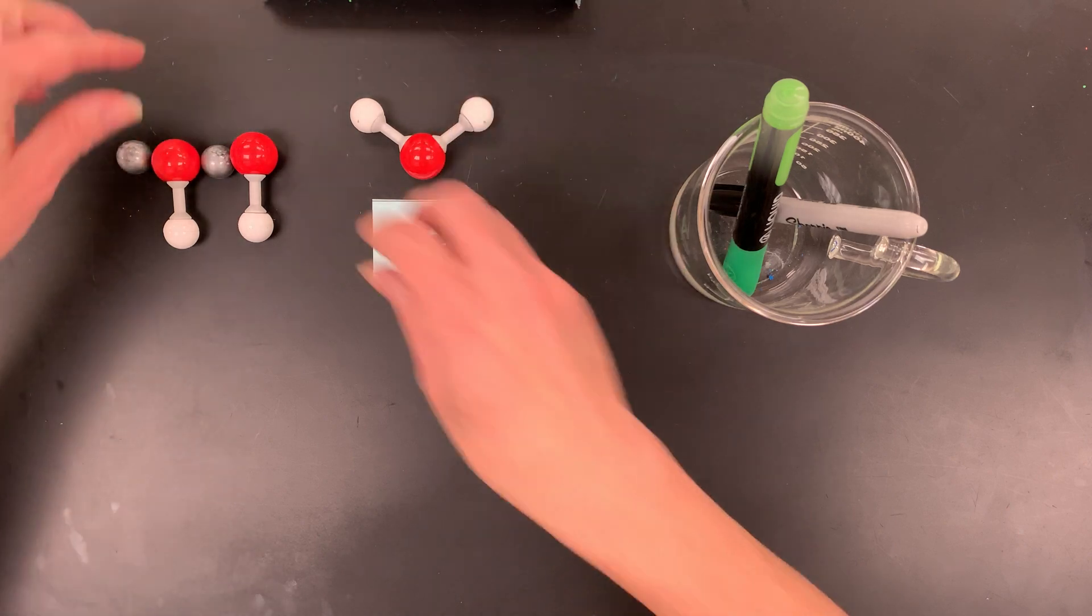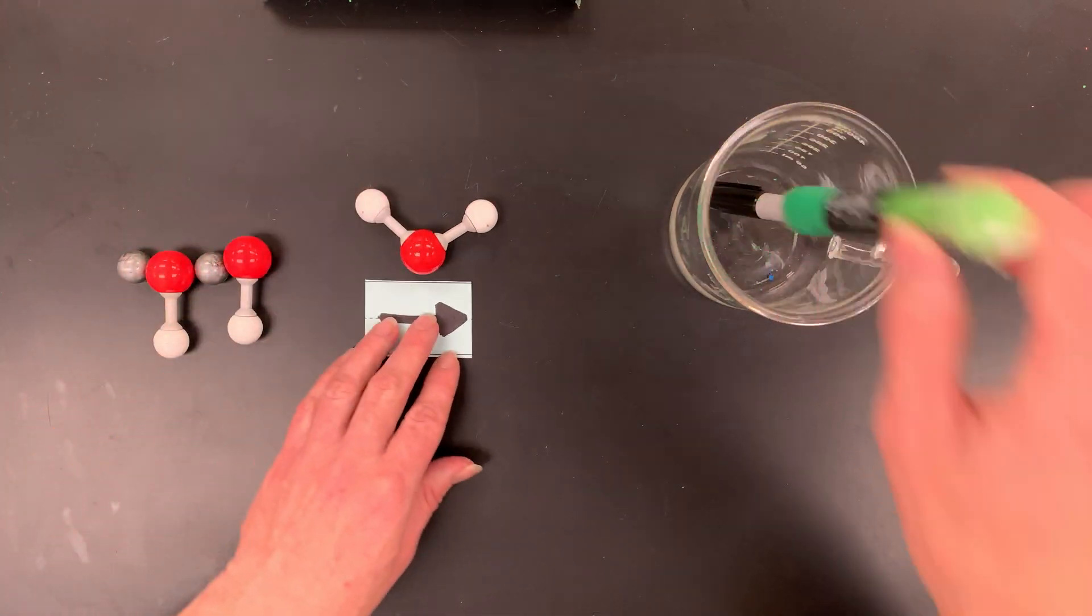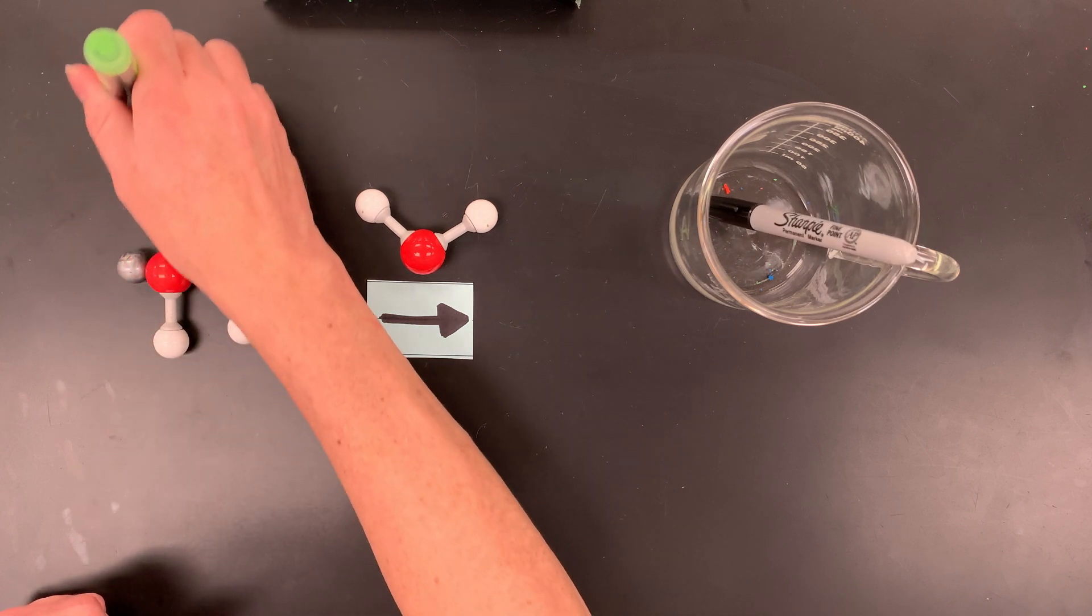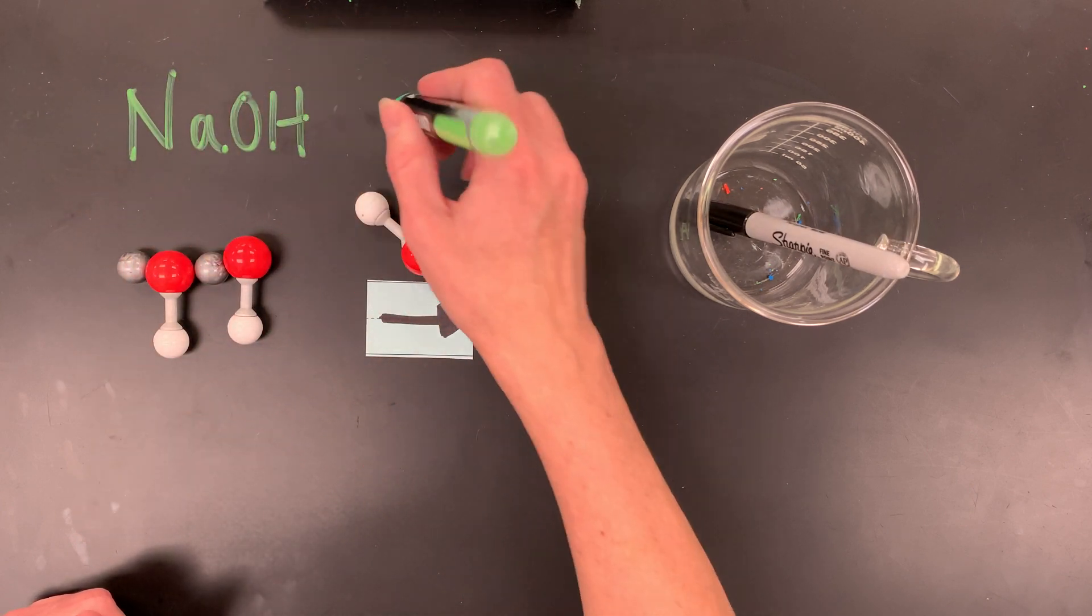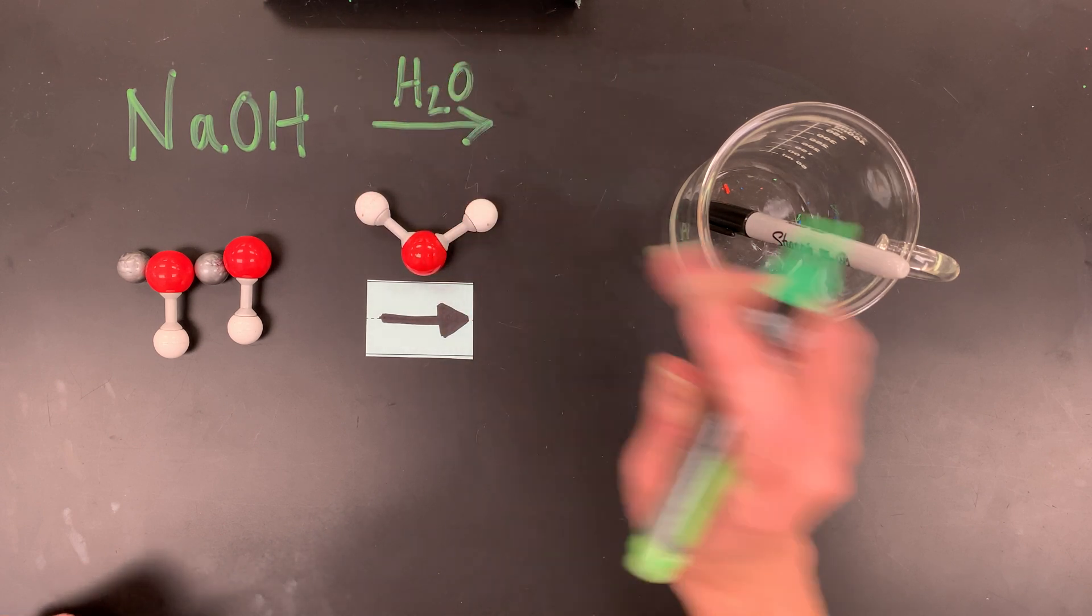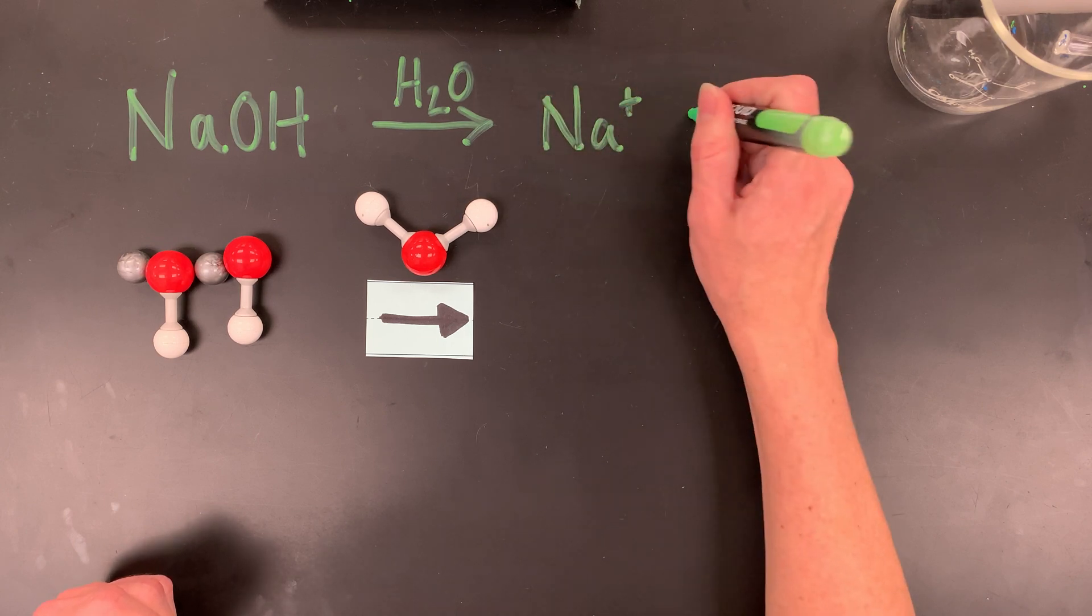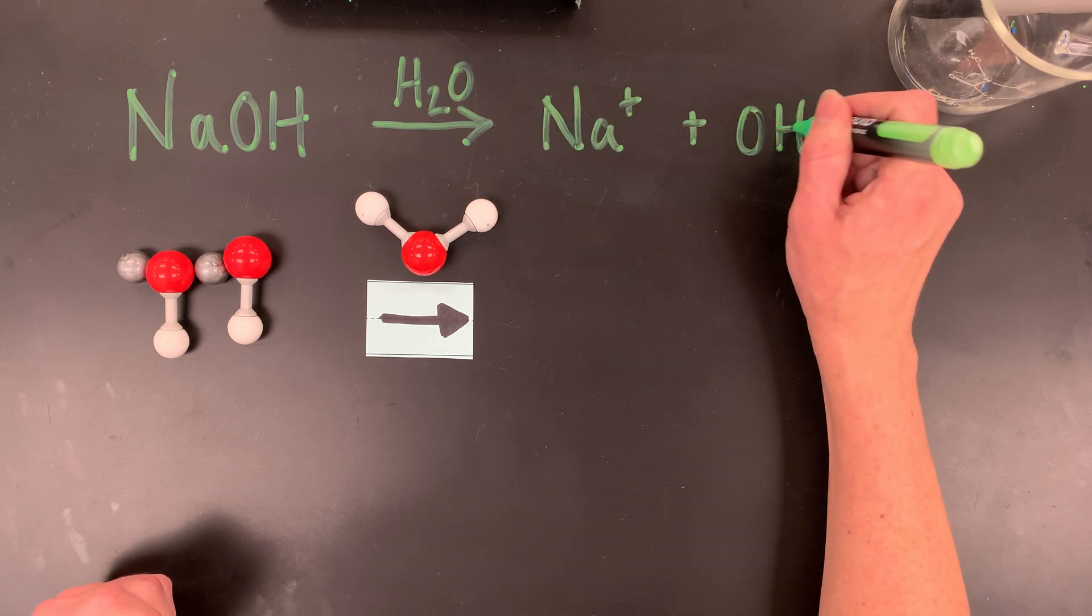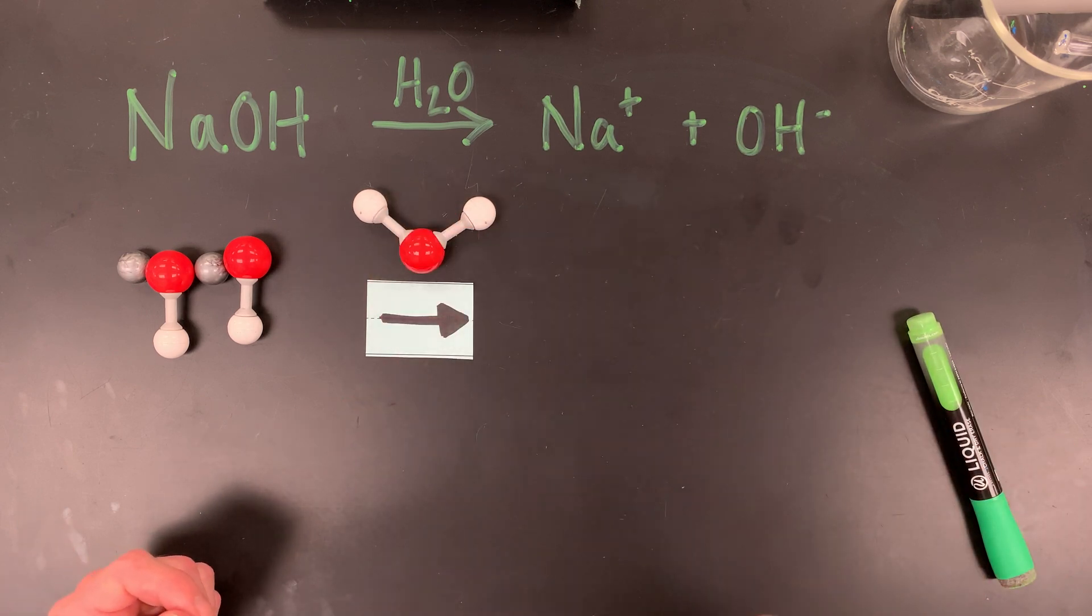Alright, so this is the strong base sodium hydroxide. Above it I'm going to write the chemical formula, NaOH. It's kind of the classic strong base. When we put it into water, it dissociates completely into ions, but the water molecules sort of facilitate this, but we're not changing the water molecules.